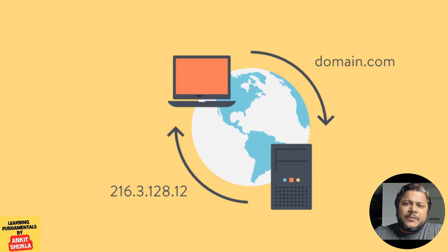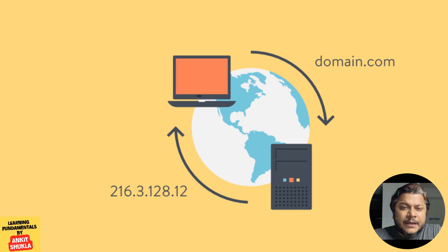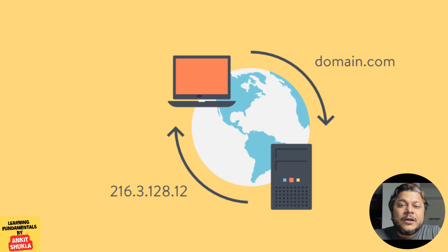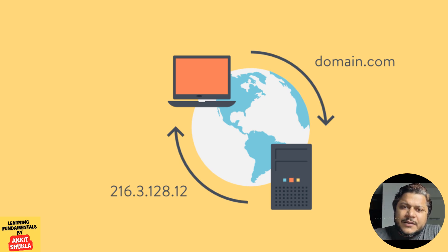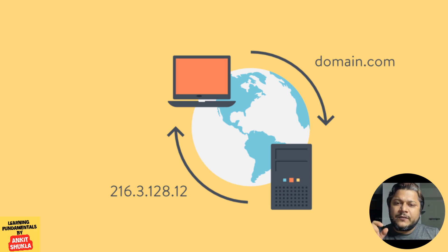As you can see in this diagram, your computer queries for a website — let's say domain.com. The query goes on the internet and one of the DNS servers, either your local DNS, your ISP, or the root DNS, responds back with the IP address, which in this example is 216.3.128.12. When this IP is received by your computer, it directs your browser to open the website using that IP address.